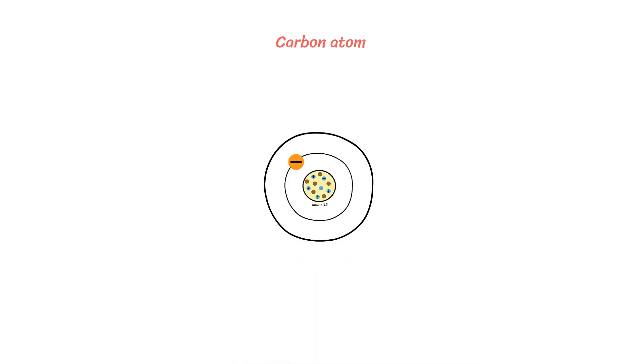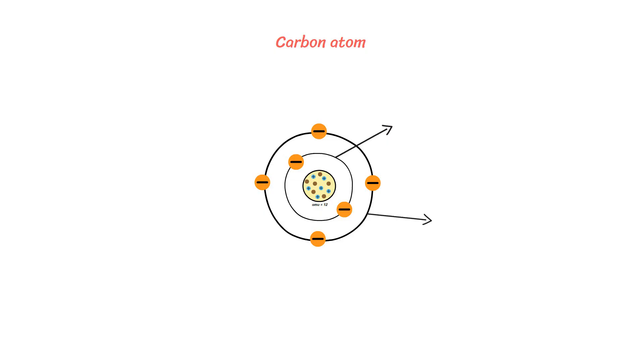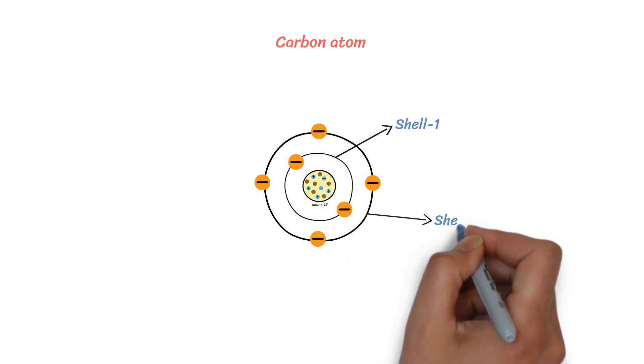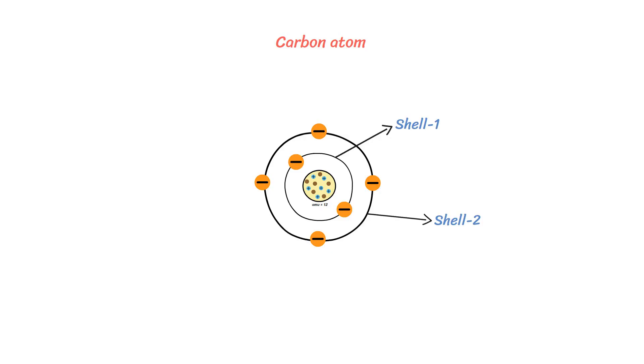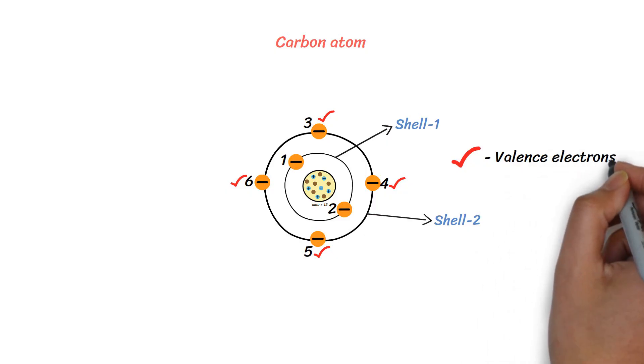Surrounding the nucleus, there are six electrons that are negatively charged particles. These electrons move within specific regions called electron shells, or energy levels. In a carbon atom, the electrons are arranged in two shells. The first shell can hold up to two electrons, and the remaining four electrons are found in the second shell. The electrons present in the outer shell are called valence electrons. As these electrons are available in the outer shell, they play a key role in chemical bonding and interactions.